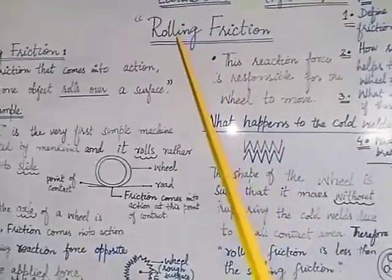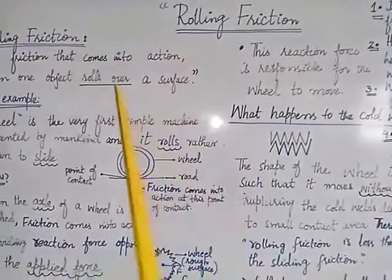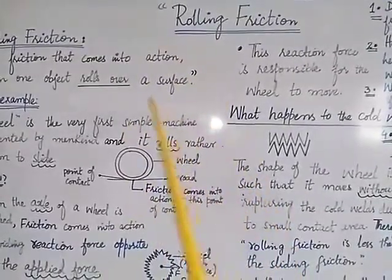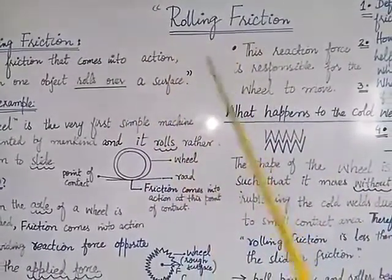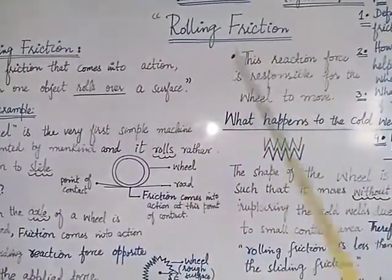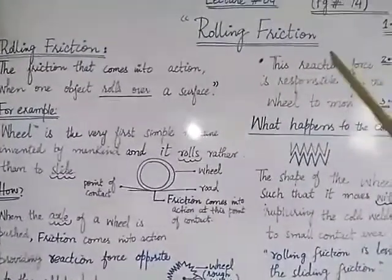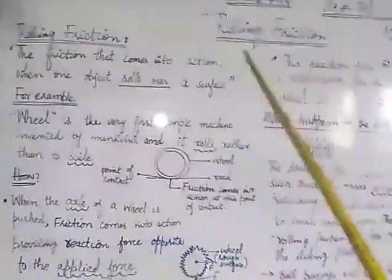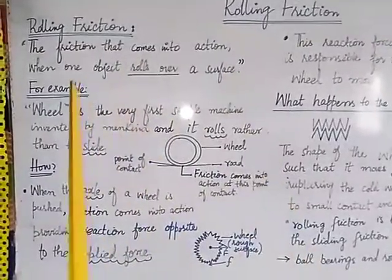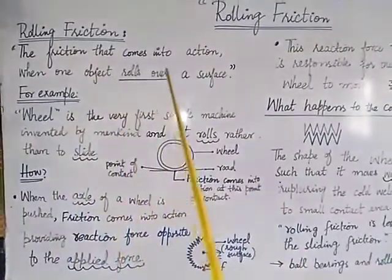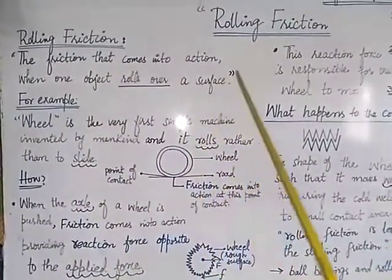What is rolling? Rolling is that kind of movement in which one object rotates and it also moves in the forward direction. Rolling friction is that friction which comes into action when one object rolls over the surface of another object.